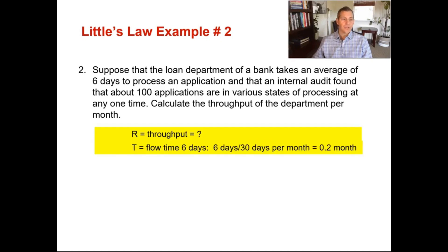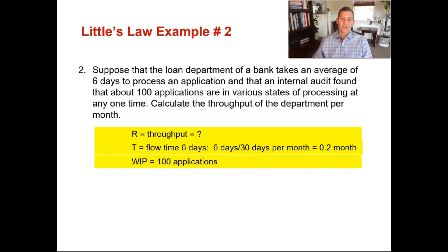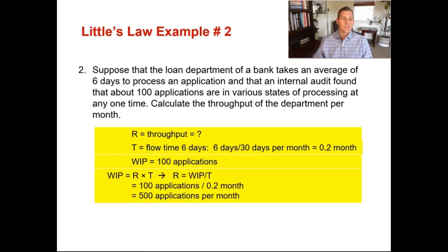We're solving for throughput R, with flow time of six days. Since there are 30 days in a month — always use 30 days per calendar month unless a different number is given — your flow time is 6 divided by 30, which equals 0.2 per month. Your WIP is 100 applications. Taking the formula WIP equals throughput multiplied by flow time and solving for R: R equals 100 applications divided by 0.2 per month, giving you 500 applications per month. That is your throughput.